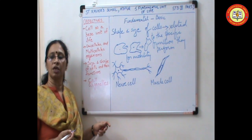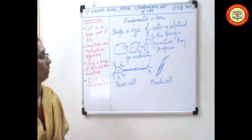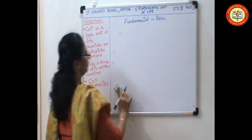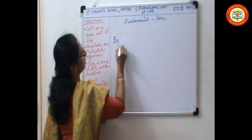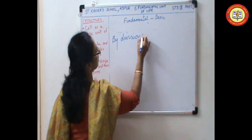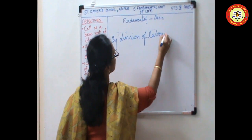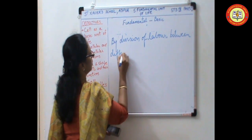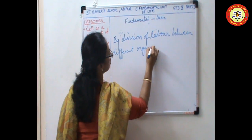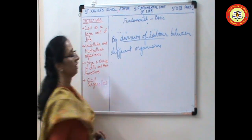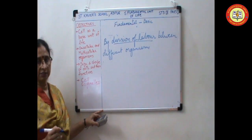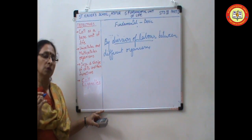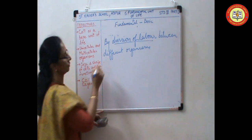Now, how do living organisms perform basic function? The living organisms perform basic functions by division of labour. They perform functions by division of labour between different organisms. Different cells have different jobs allotted to them. And they work as a team to perform for the proper functioning of the body.